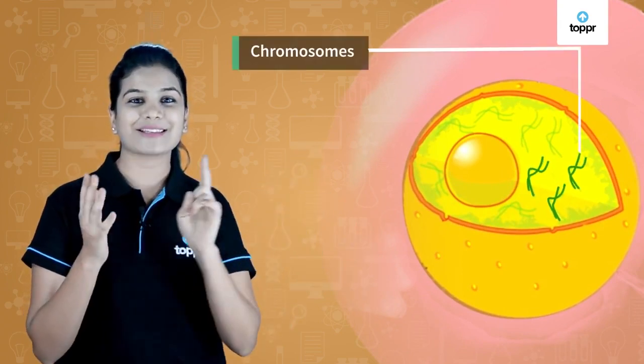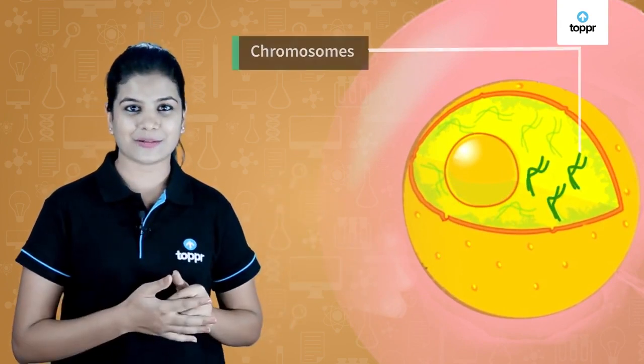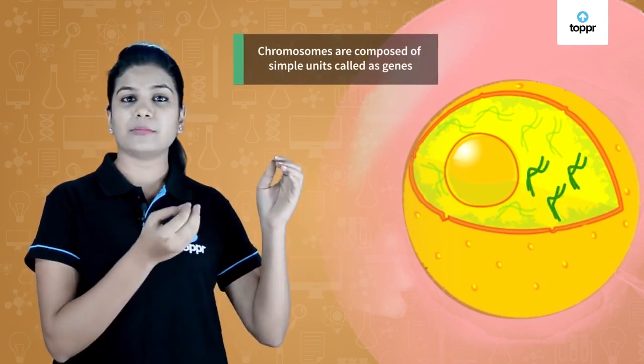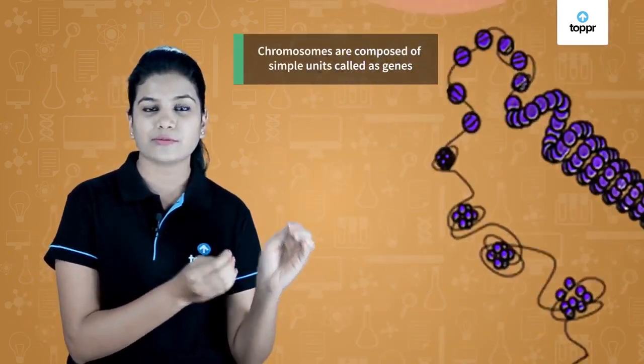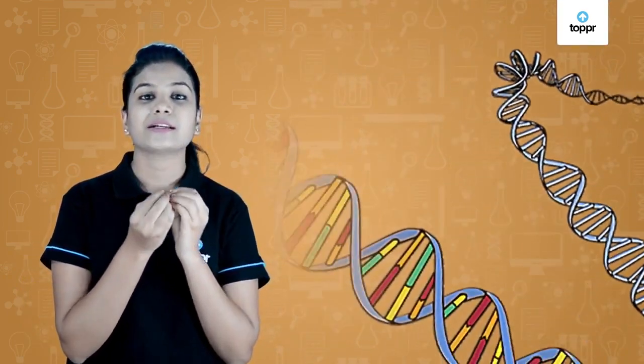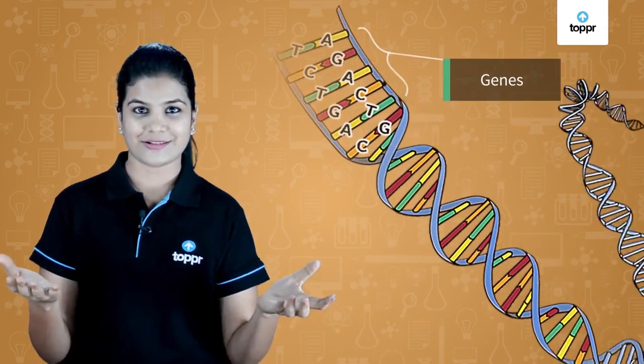I'm sure you can observe those thread-like structures which are called chromosomes. These chromosomes are made up of tiny tiny units which are called genes.